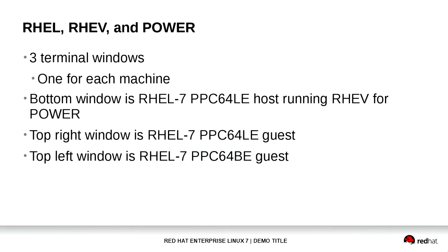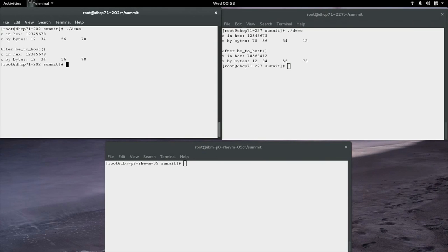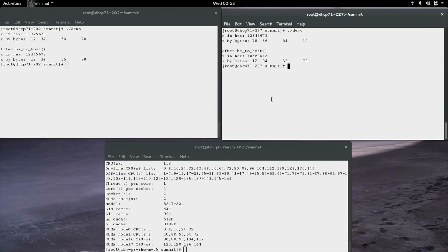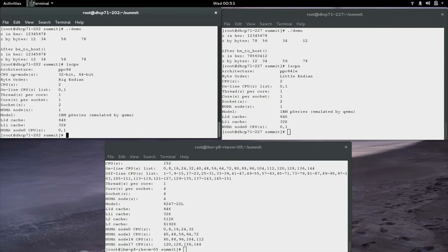What is Red Hat doing with the PowerPC Little Endian platform? Let's dive into another example. I have three windows on the screen. The bottom screen is a PowerPC Little Endian hypervisor running RHEV, and on top of that is a Little Endian guest on the right running RHEL 7, and a Big Endian guest on the left also running RHEL 7. I'm going to rerun the same demo as before to show the same output, and then run LSCPU on both guests and the hypervisor to show that everything I'm saying is true and no tricks here.